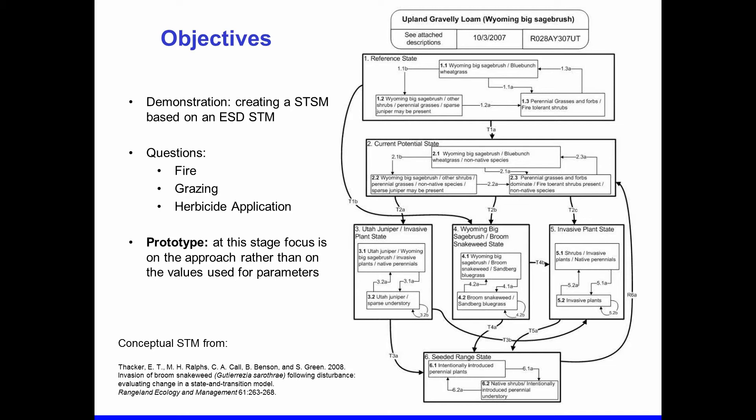I want to caveat the presentation with the fact that this is a prototype model. At this stage, the focus is on the approach we took rather than on specific values used for model parameters or on the model predictions themselves. The conceptual model we worked with was for upland gravelly loam Wyoming big sagebrush from Utah, with a reference at the bottom left for the publication where this model was first published.